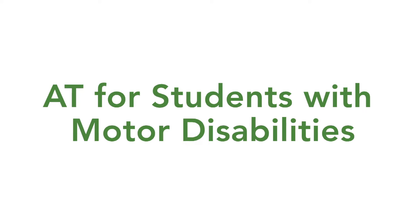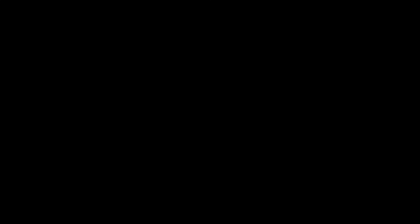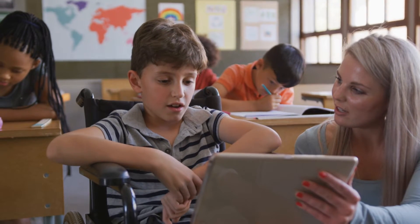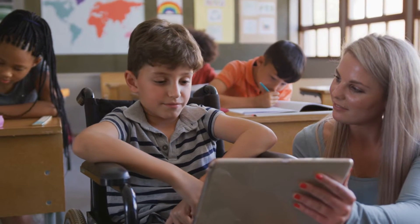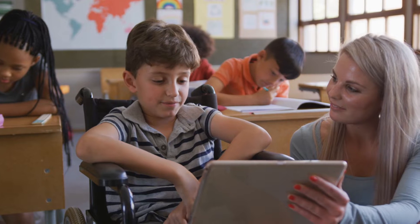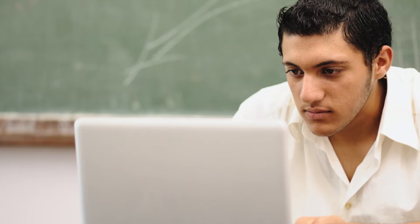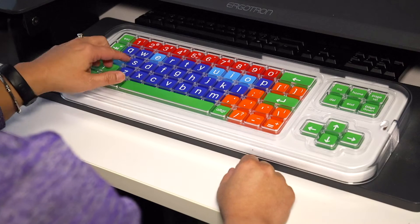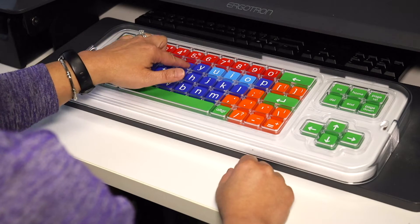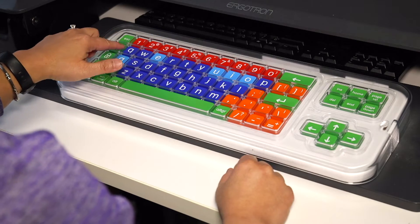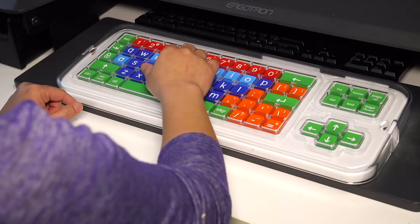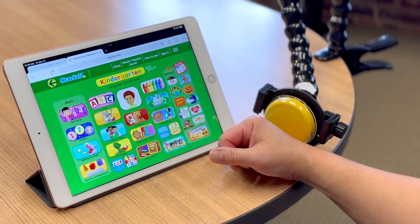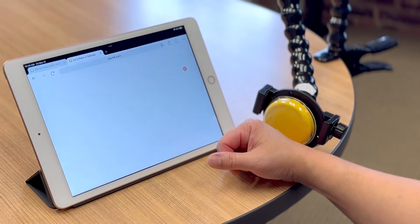AT for students with motor disabilities. Students with significant motor impairments may have difficulty accessing computers in class using a standard keyboard and mouse, or through standard touchscreen technology on iPads, tablets, and some computers. These students may have difficulty with fine motor skills or difficulty using their hands or larger motor movements. They may need to use alternative input devices that allow them to access a computer or other technology in a way that works best for them.